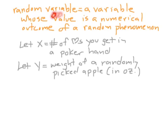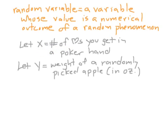What do we mean by a random variable? We usually use capital letters like X and Y. A random variable is a variable — although in a different sense than a variable in algebra — whose value is a numerical outcome of a random phenomenon. For example, we might say the random variable X is the number of hearts you get when you deal a poker hand. Dealing a poker hand is a random phenomenon, and the number of hearts you get is some numerical value. A random variable is a number that comes from some kind of random event.